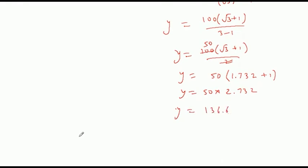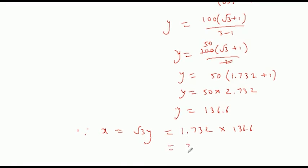Now let's find x. From equation 1, x = root 3 · y = 1.732 × 136.6. Calculating: 136.6 multiplied by 1.732 gives approximately 236.5912, so x equals approximately 236.6 meters. This is the x value.